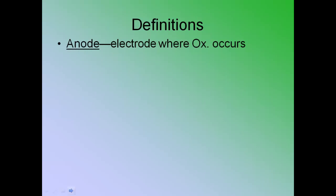The anode. The anode is the electrode where the oxidation occurs. Now, I realize that we haven't actually defined what oxidation is. Well, oxidation is the loss of electrons.